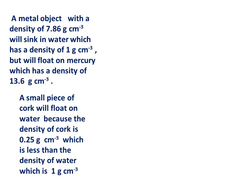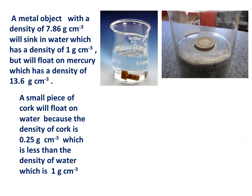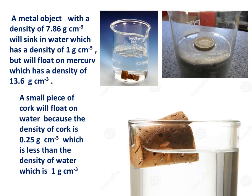A metal object with a density of 7.86 grams per centimeter cube will sink in water, which has a density of 1 gram per centimeter cube, but will float on mercury, which has a density of 13.6 grams per centimeter cube. A small piece of cork will float on water because the density of cork is 0.25 grams per centimeter cube, which is less than the density of water, which is 1 gram per centimeter cube.